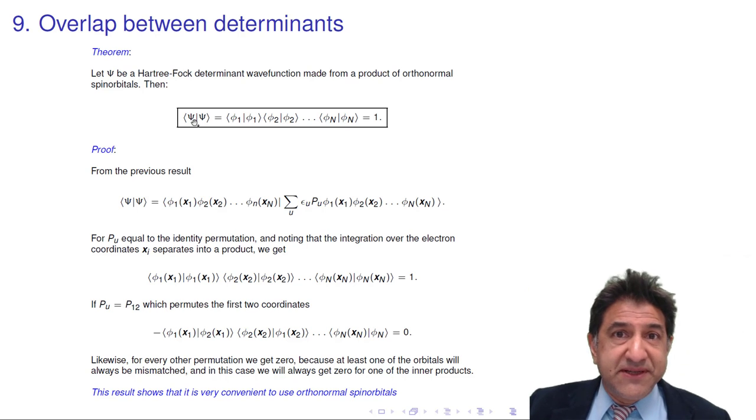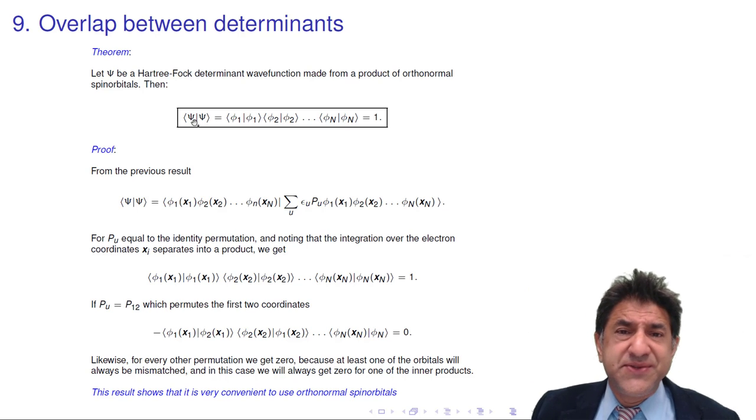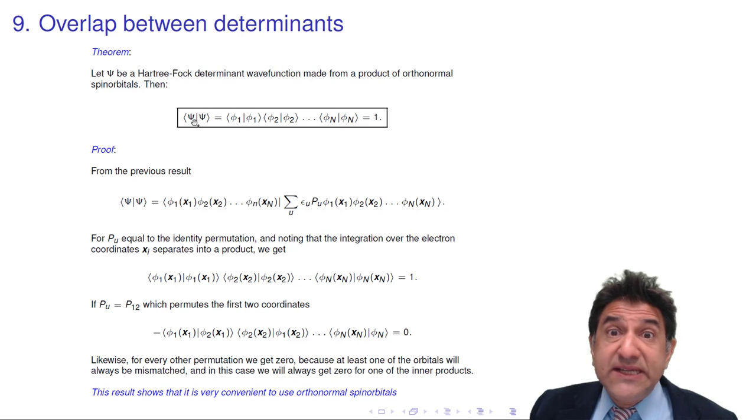Hi there. Welcome to Chemistry 3007 at the University of Western Australia. In the previous lectures we were talking about the properties of anti-symmetrisers and we proved two interesting properties. And now we're going to use those properties that we proved to calculate the overlap between two determinant wave functions.